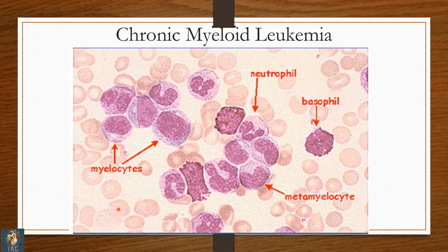So if you are seeing Auer rods in promyelocytes, the diagnosis is acute promyelocytic leukemia. This next slide shows different members of the WBC series — neutrophils, myelocytes, metamyelocytes, even basophils. This is a peripheral smear of a patient of chronic myeloid leukemia, having all these members of the WBC series in circulation.